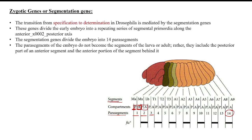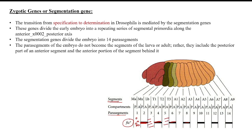The pair rule genes are multiple and they remain in parasegments. In each parasegment there will be a different gradient. If a pair rule gene is present in the 1st parasegment, then it will be present in the 3rd, then in the 5th, but it will not be present in the adjacent compartment. So pair rule genes are expressed in an alternating manner across parasegments.